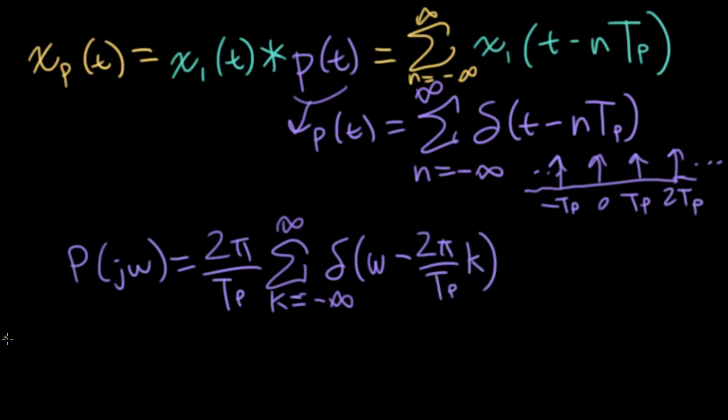So what does my periodicized signal look like in the frequency domain? So I'll have the Fourier transform of my core function, big x sub 1. And since I'm convolving in the time domain, I'll be multiplying in the frequency domain. So that's multiplied by big p j omega.